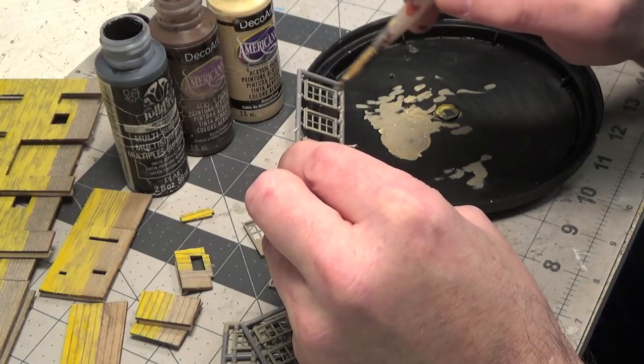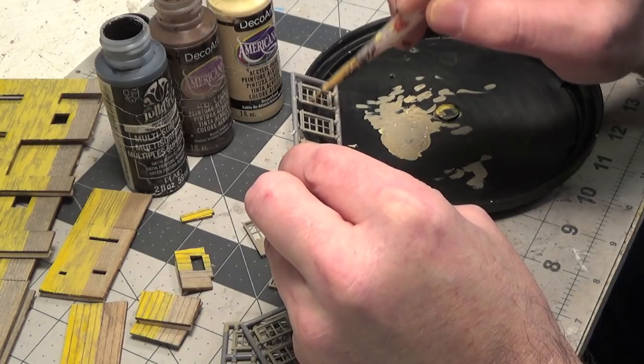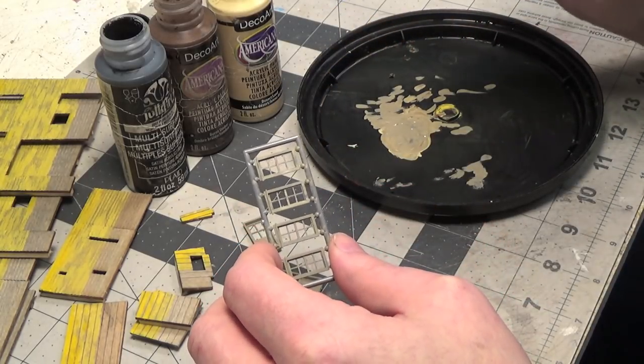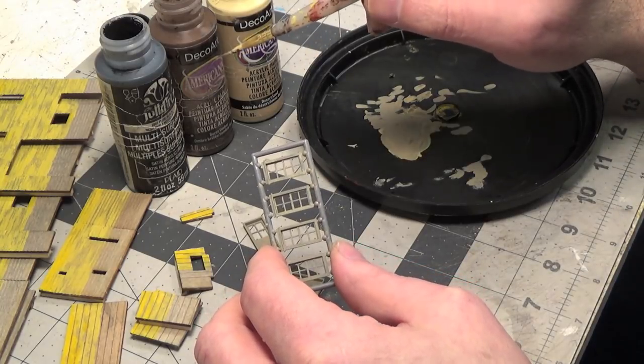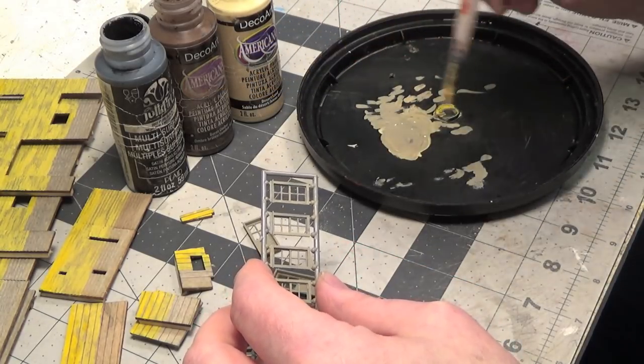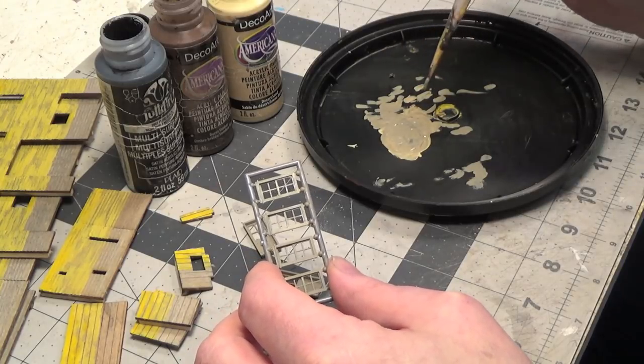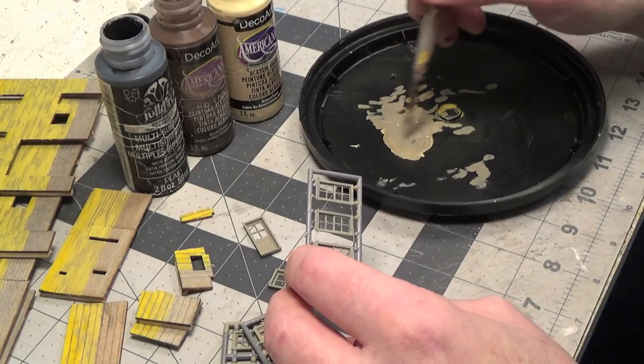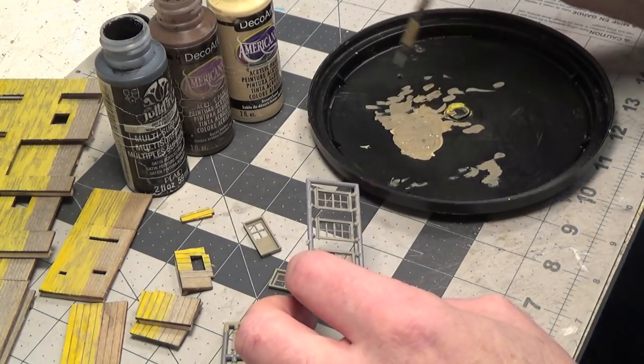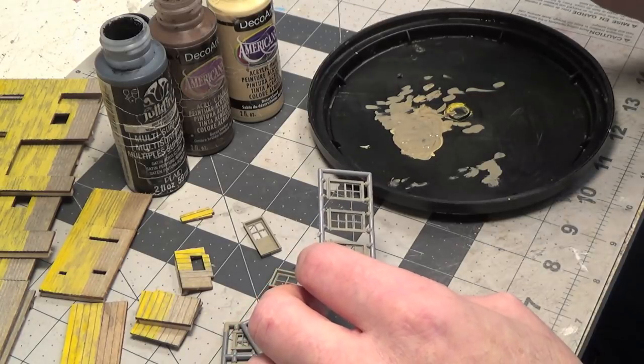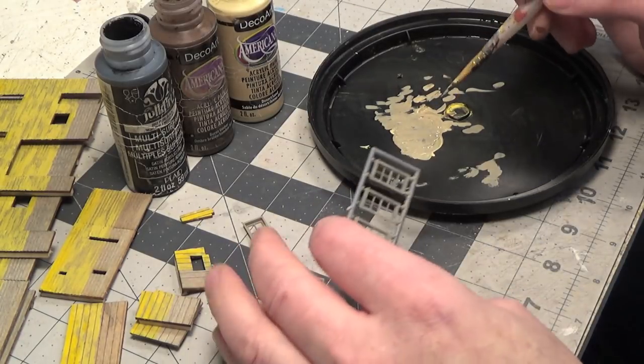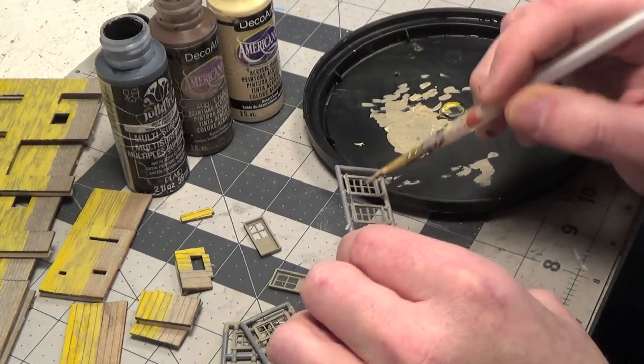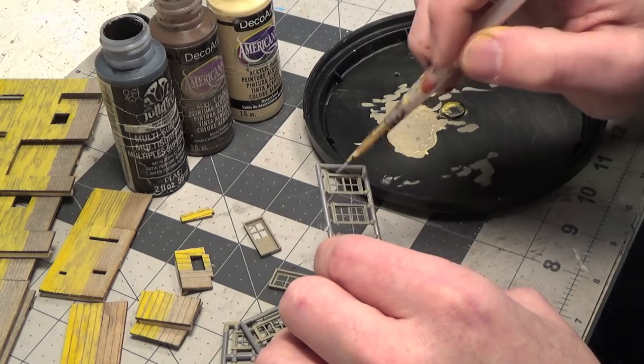I think too many people try to make it an exact science where they want to be told 50% of this color, 30% of this color, 20% of this. Mix it to a solid consistency. And it doesn't give it a natural look by doing that. By just going with random colors, not mixing it to a solid color, and brushing it on randomly gives it way more of a natural look.